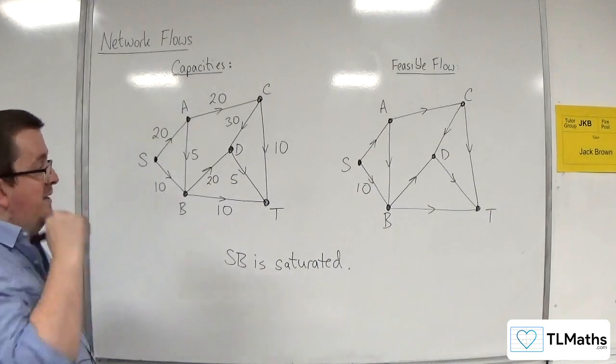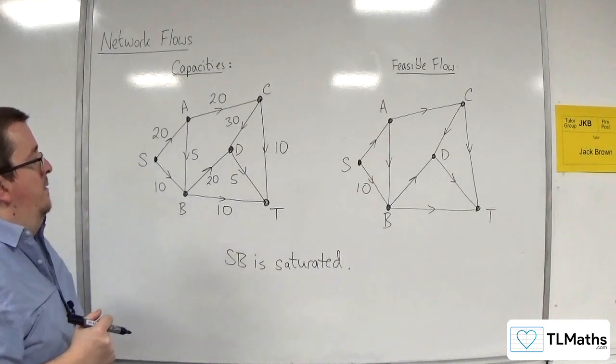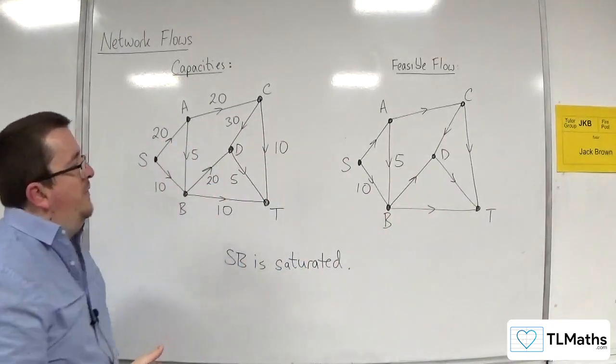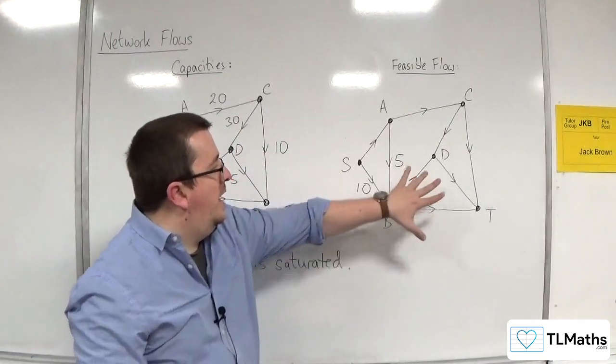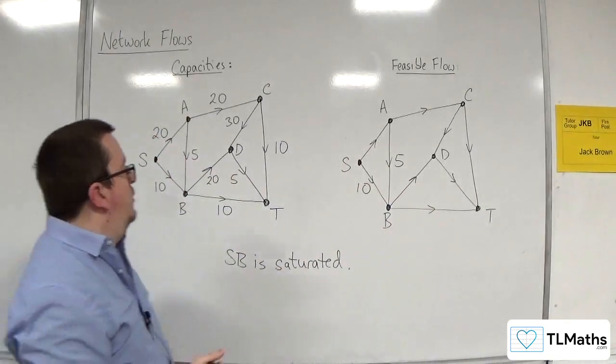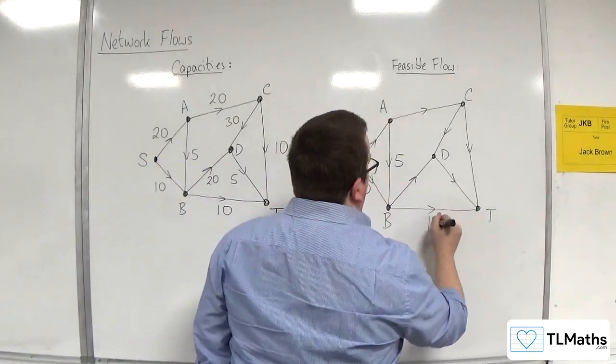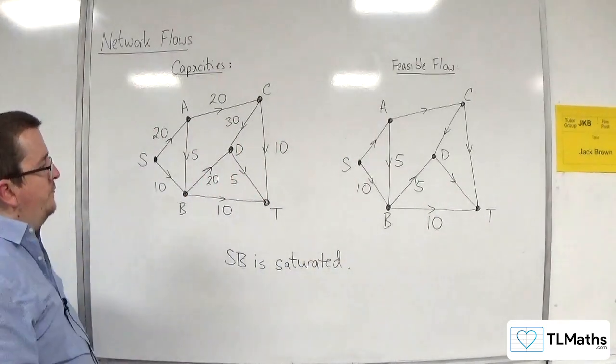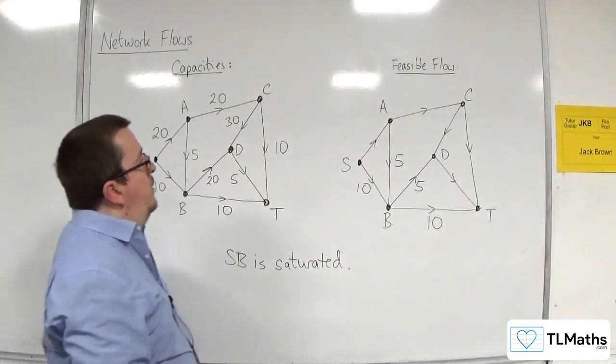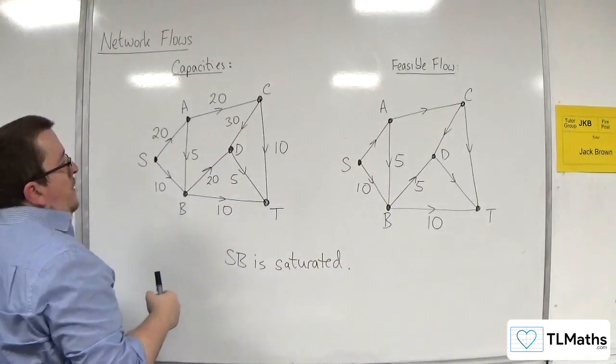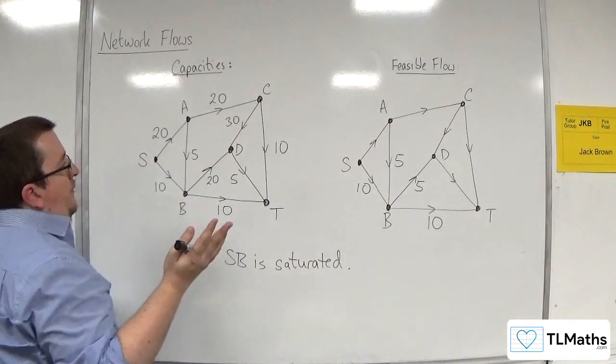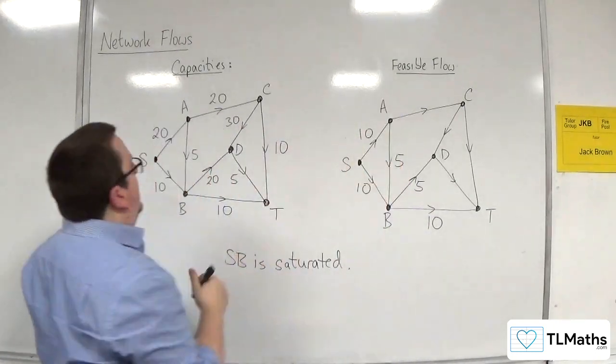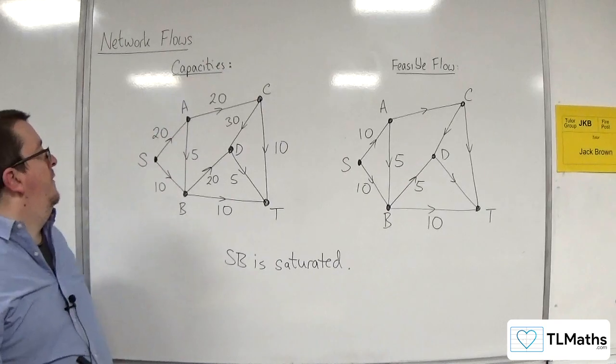Let's add a few more in. So let's say if I've got 5 coming from A to B, then I'm going to have to have 15 coming out. So I could have 10 going along there and 5 going along there, for example. So the moment I've got 5 coming out of A. Let's say I have 10 going from S to A. That's perfectly fine because it's got a capacity of 20.